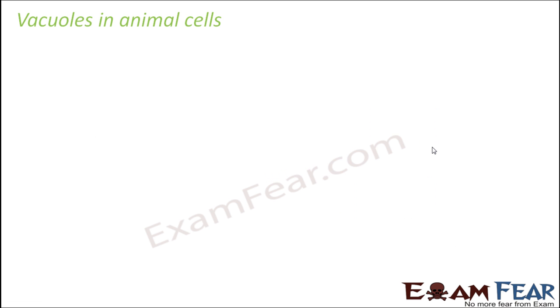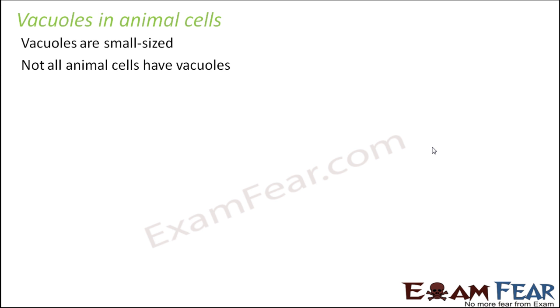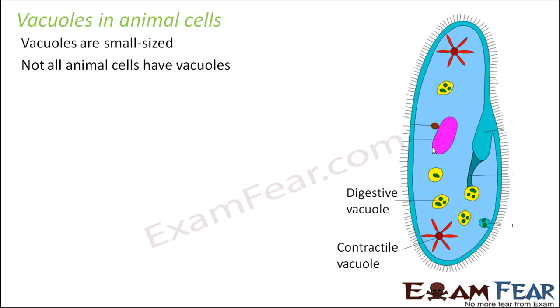In animal cells we do see vacuoles, but they are not as big as in plant cells - they are quite small in size. However, there are animal cells which do not have vacuoles at all. So vacuoles are not compulsorily present in animal cells; they can be present or absent, and if present, they are generally small in size.